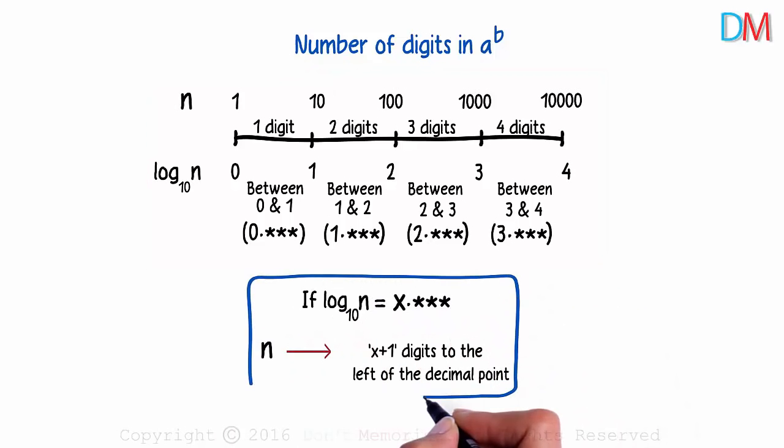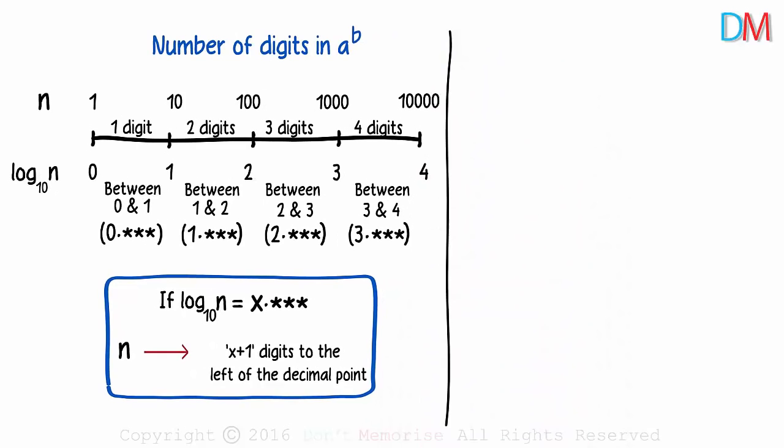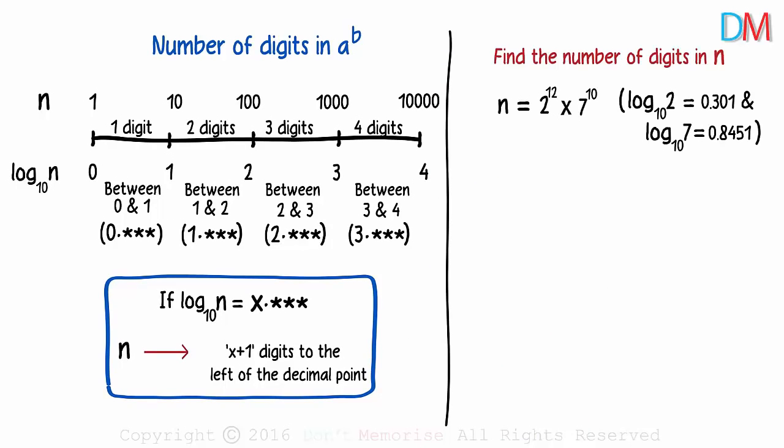This is how logarithms help us find the number of digits in a to the power b. Let's try out an example. There you go. We have to find the number of digits in this number. And we have been provided with these two logarithmic values. Needless to say, you aren't allowed to use the calculator.